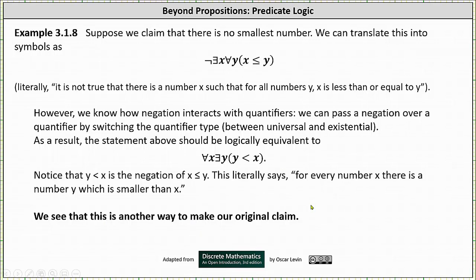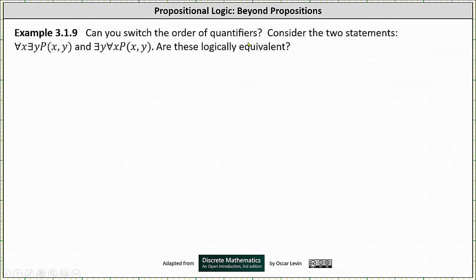Let's look at a second example. Can we switch the order of quantifiers? Consider the two statements: for every number x, there exists a number y such that P(x, y) is true, and there exists a number y for every number x such that P(x, y) is true. Are these logically equivalent?